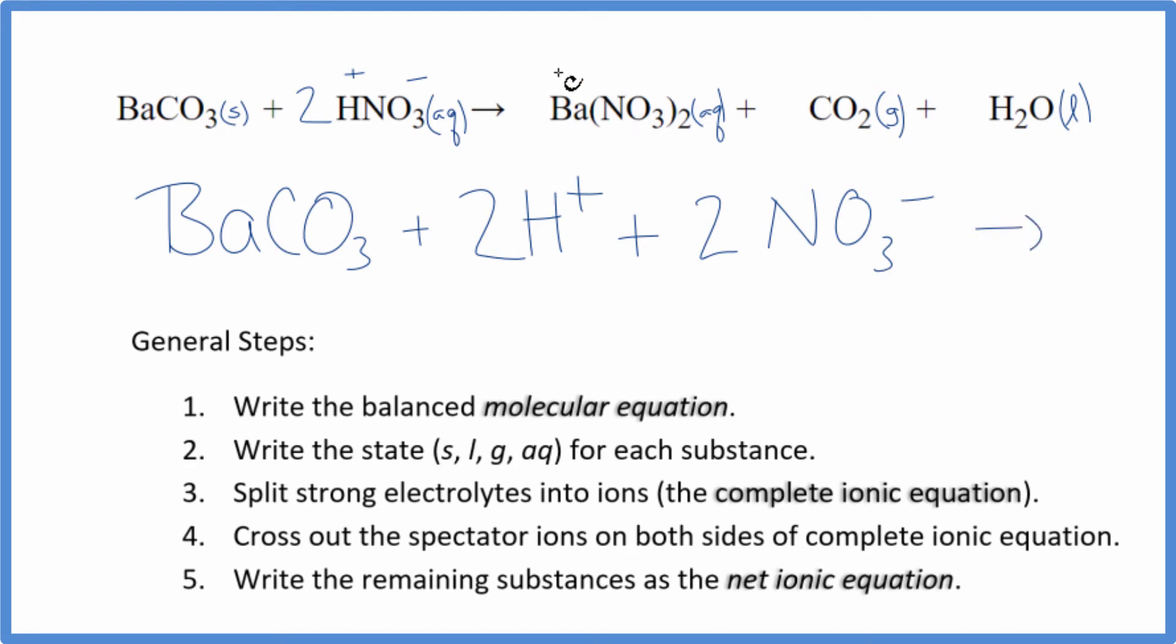In the products, barium is in group 2 on the periodic table so that's 2 plus, and nitrate is 1 minus. So we have Ba 2+ barium ion and again we have two of these nitrate ions. So two nitrate ions, and then we don't split gases or liquids apart so we just have the CO2 as a gas and then liquid water H2O. This is the complete ionic equation.